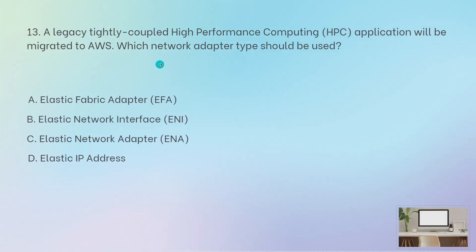Next question: a legacy tightly coupled high performance computing application will be migrated to AWS — which network adapter should be used? This is very easy. Whenever you have high performance computing, the answer is Elastic Fabric Adapter. For big games and everything, you need very high performance computing, so Elastic Fabric Adapter is the one which gives you high performance networking and high performance computing for any application.